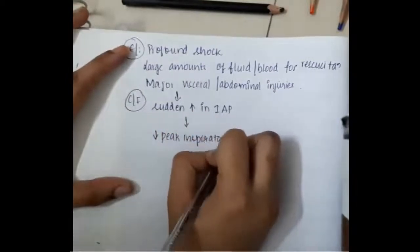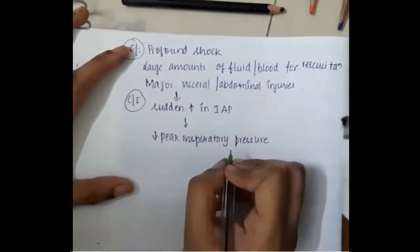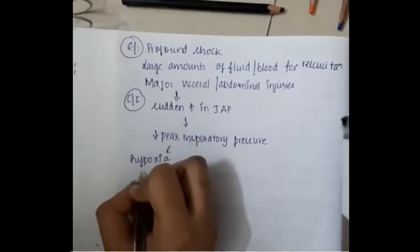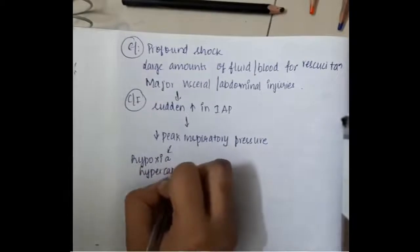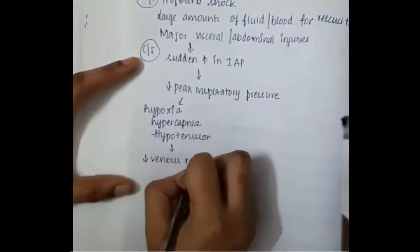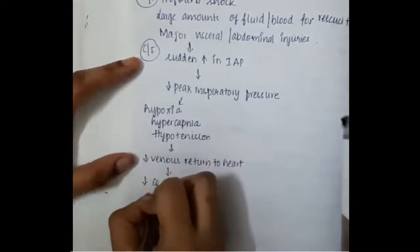Due to that, there is sudden increase in intra-abdominal pressure which decreases the peak inspiratory pressure due to the compression of the lungs. This will lead to hypoxia, hypercapnia and hypotension which finally decrease the venous return to the heart.